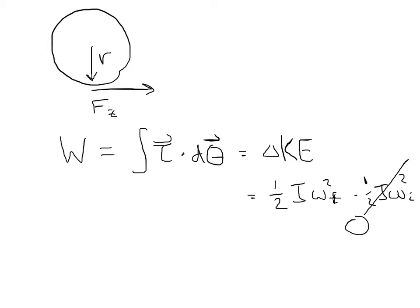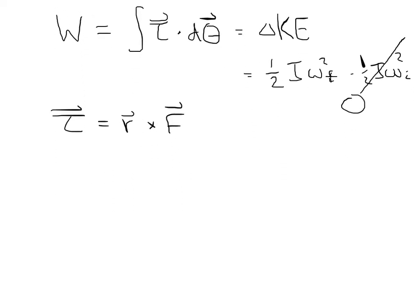Now let's calculate this. Torque is just R cross F. In this case, we know that R is just the radius of the wheel, and F is just F zippy, and they're perpendicular to each other. So this is equal to R times F zippy, and that's a number that we already have.